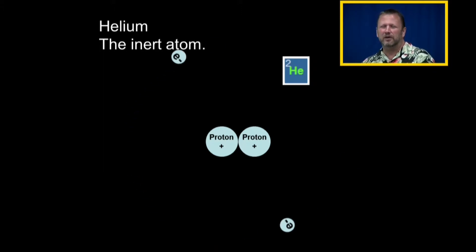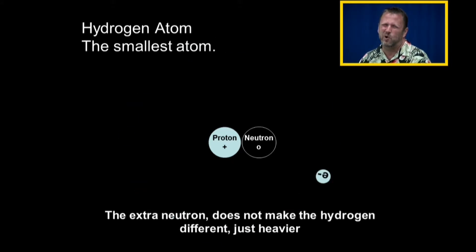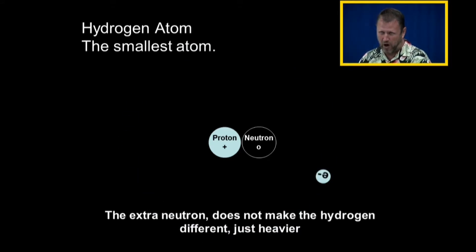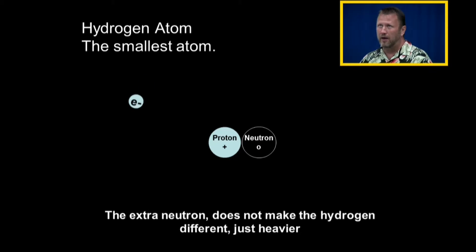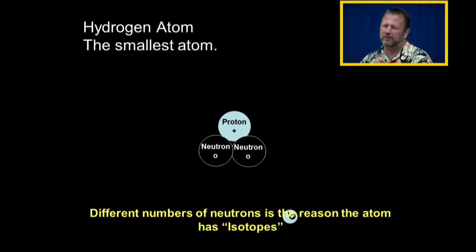Helium has two protons, so you need two electrons to support that configuration. Although an element must have a fixed number of protons to be that element, it can have variable numbers of neutrons. Hydrogen has one proton and one electron, but if there's an extra neutron in the nucleus, that doesn't make it different — it just makes it heavier. That's what heavy water or heavy isotopes means — more neutrons. Those neutrons decay and are radioactive. You'll hear about iodine-127 and iodine-131 — still iodine, but with different numbers of neutrons. Different numbers of neutrons are the reason atoms have different isotopes.